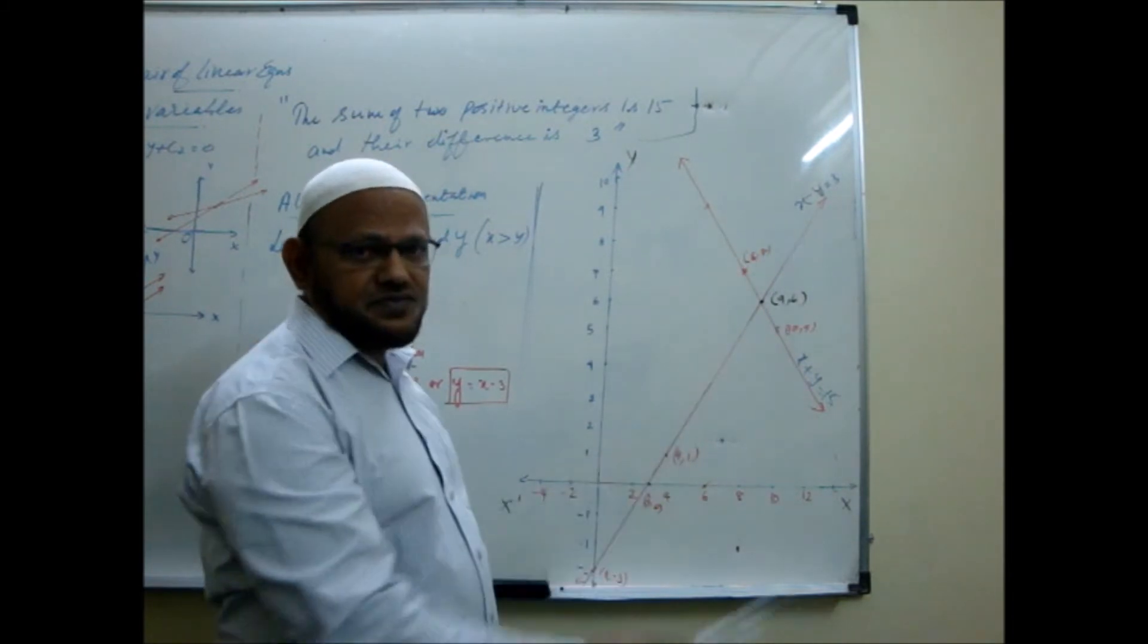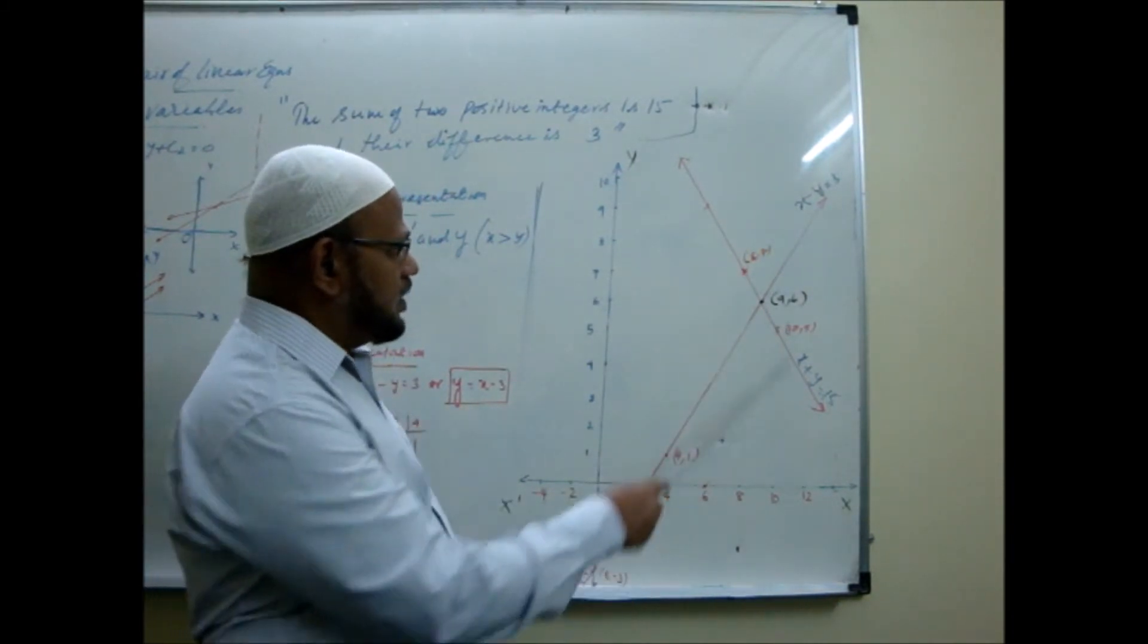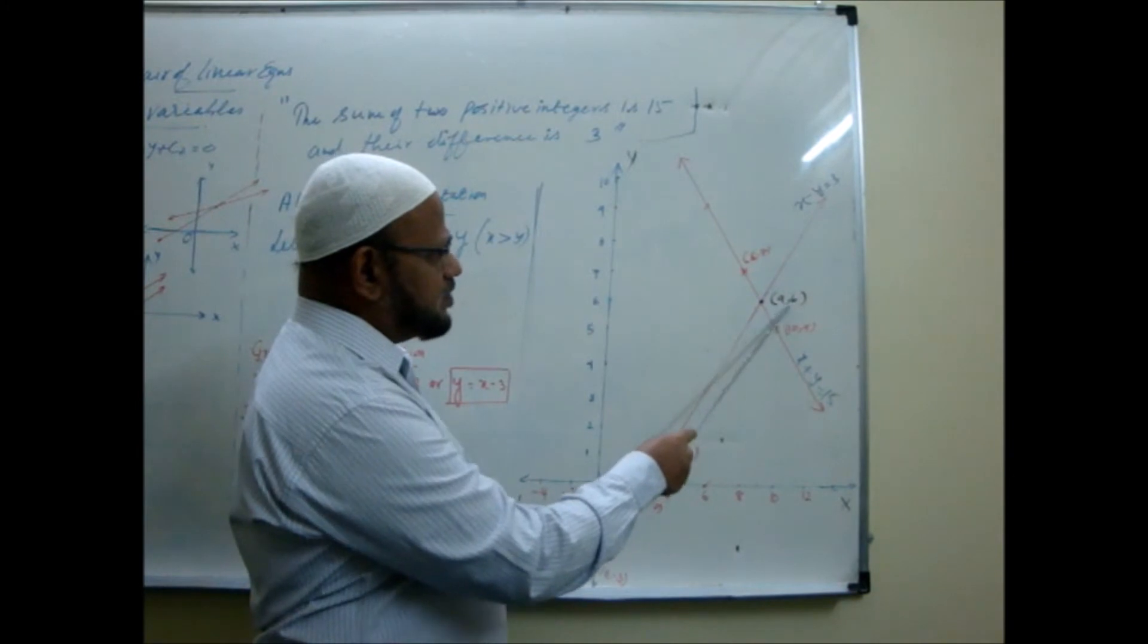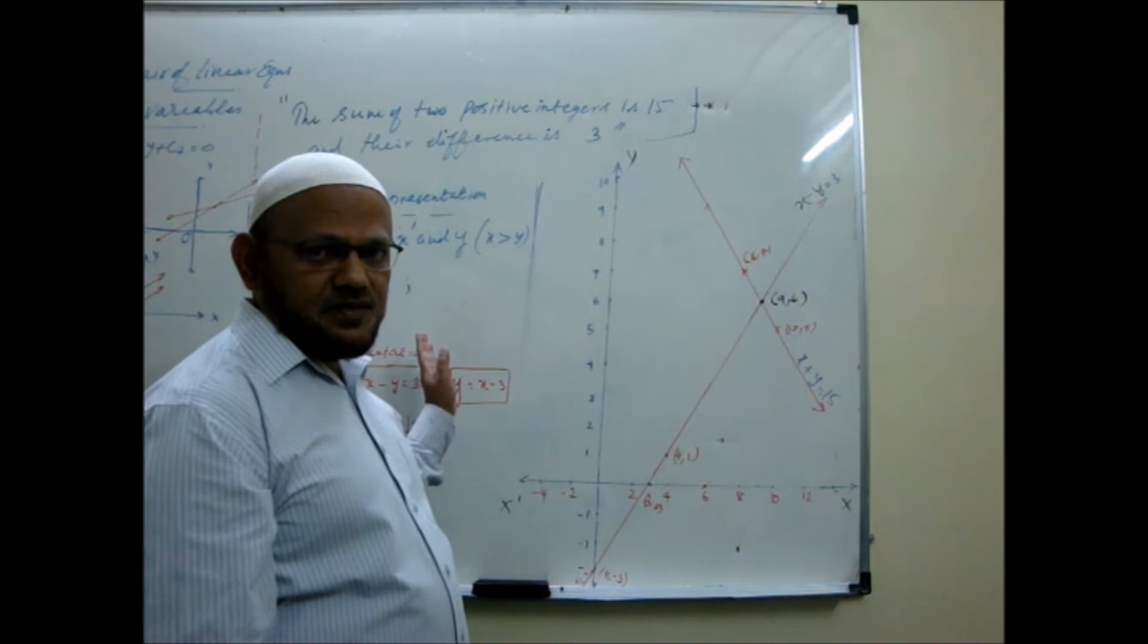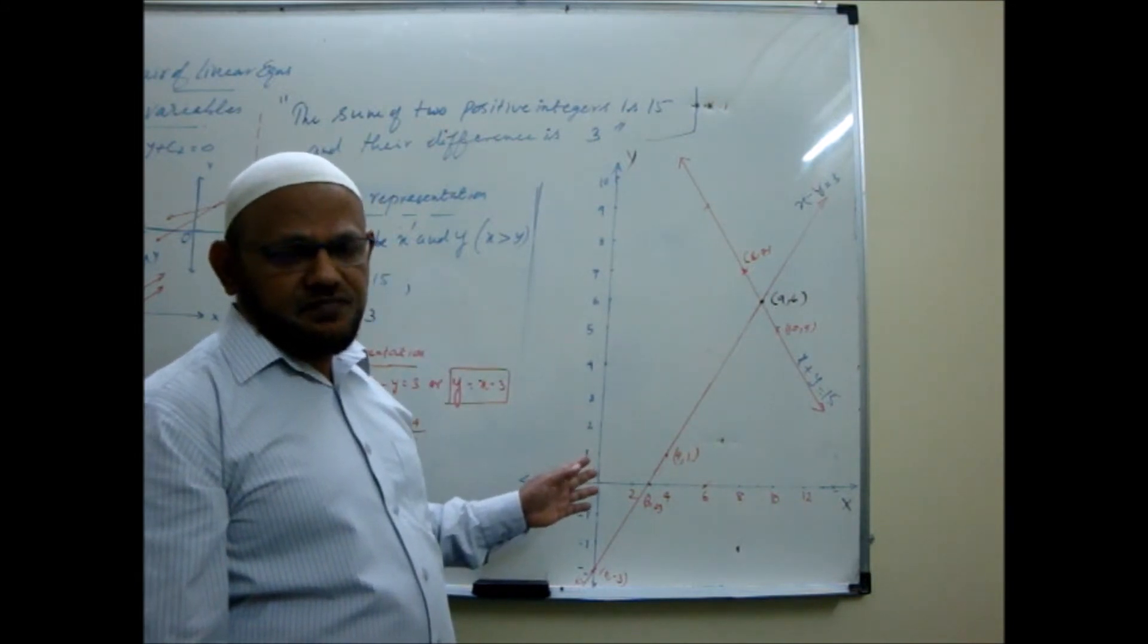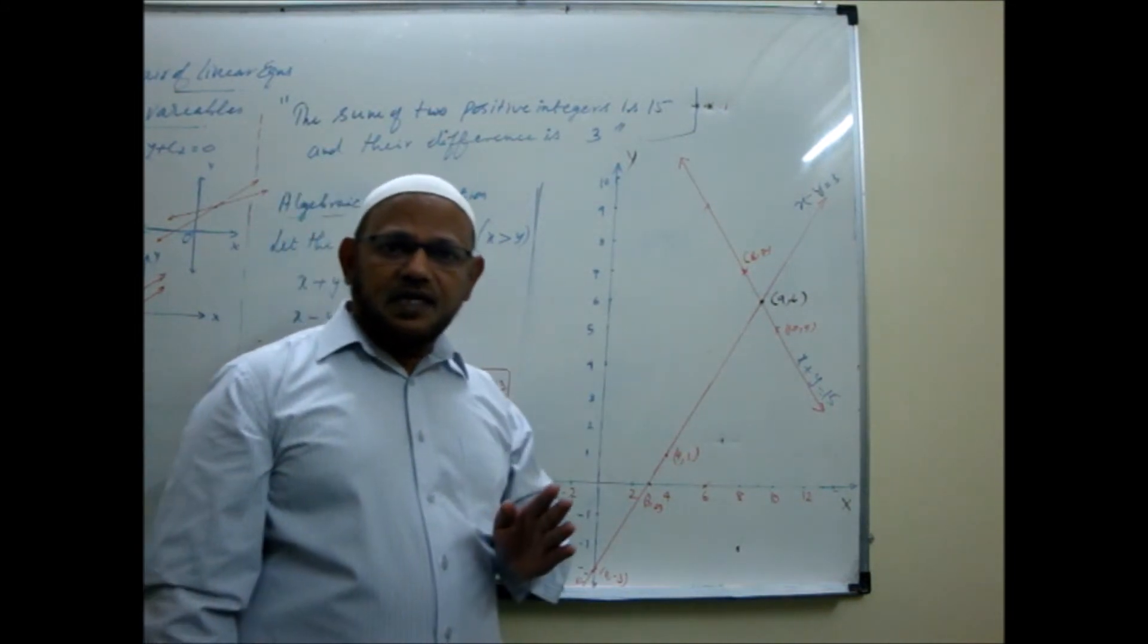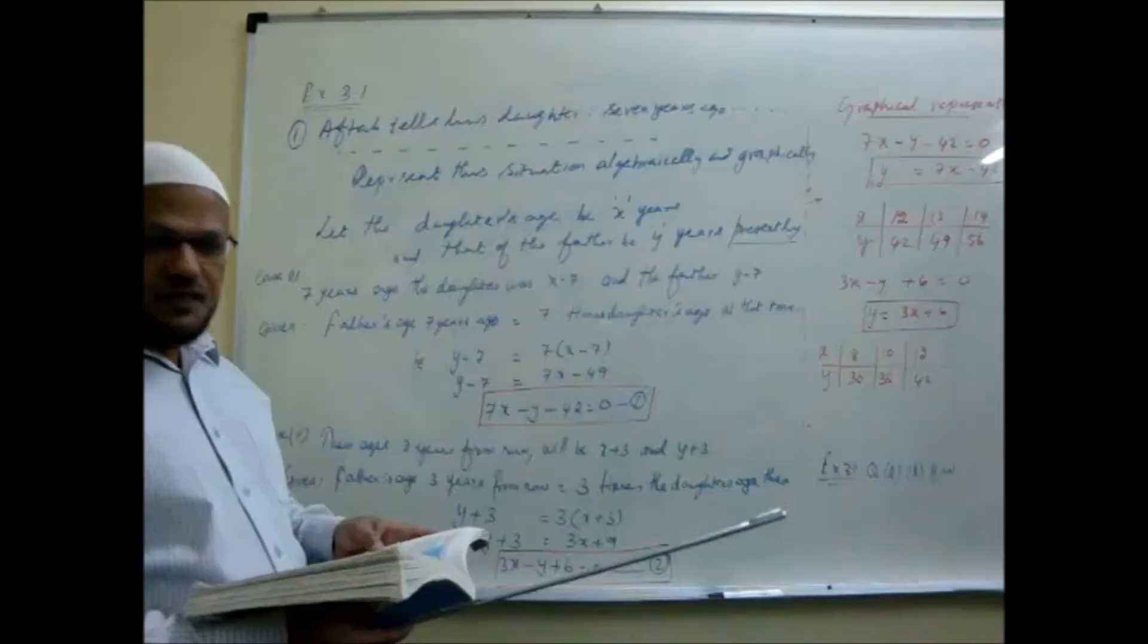The point of intersection gives you solution. You see, x is equal to 9, y is equal to 6 is the solution. Add the term 15 coming, subtract the 3 coming. Now, next we are going to see more examples or exercise questions, how to represent algebraically and graphically.